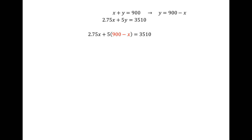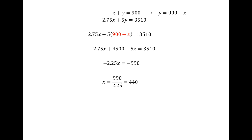Now we solve this linear equation. Distributing the 5 through the parentheses and combining like terms, we subtract 4500 from both sides, ending up with negative 2.25x equals negative 990. Dividing, we get 990 over 2.25, which gives us x equals 440. Then y equals 900 minus 440, which is 460.